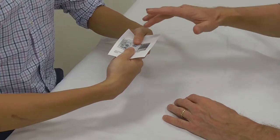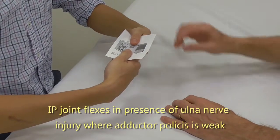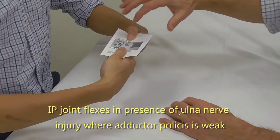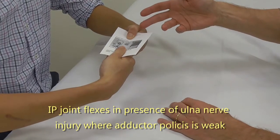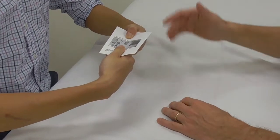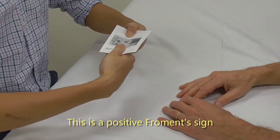So if you just demonstrate, if you had a positive Froment's sign, what would happen now? You can see that the thumb goes into flexion, and because the FPL is recruited, because the adductor pollicis isn't, so that would be a positive Froment's sign on the left.